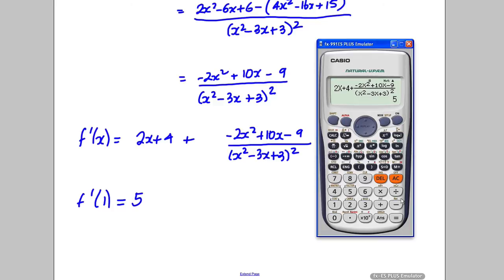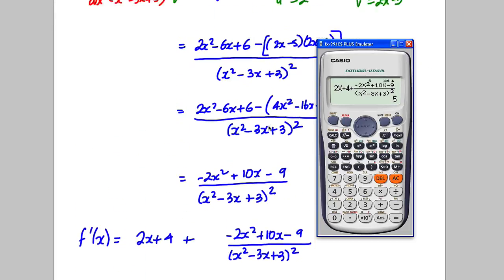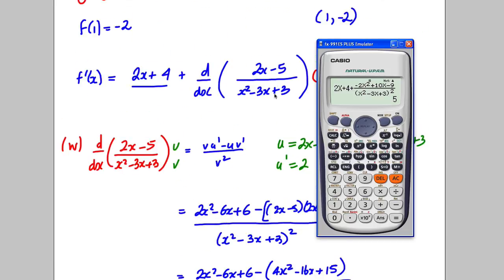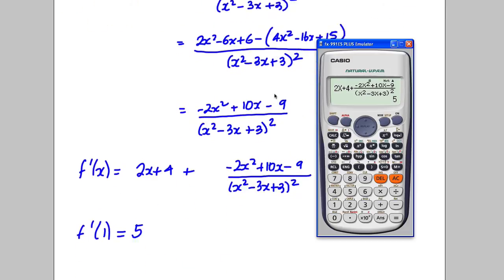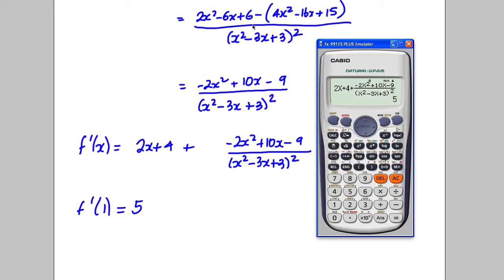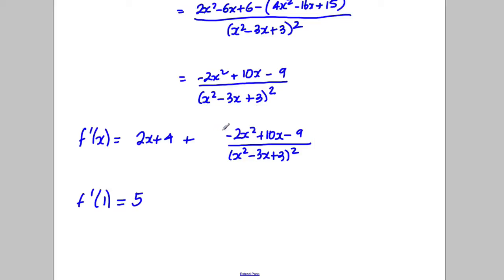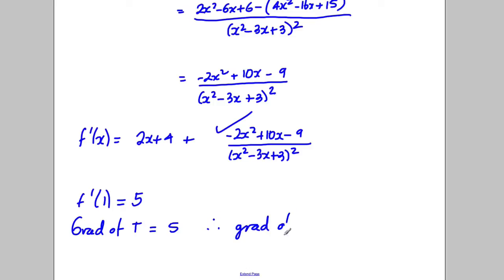Just to note: you didn't have to fully simplify and expand everything. If at an earlier point you felt confident you had the gradient, you could have substituted in then — there was nothing in the question requiring you to show it fully algebraically. The gradient of the tangent is 5, therefore the gradient of the normal is the negative reciprocal: −1/5.